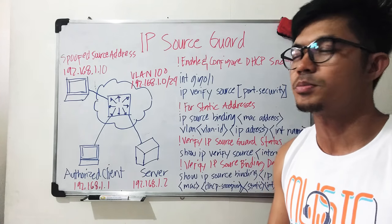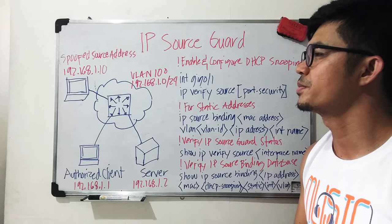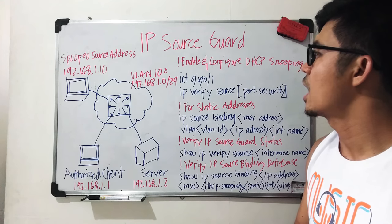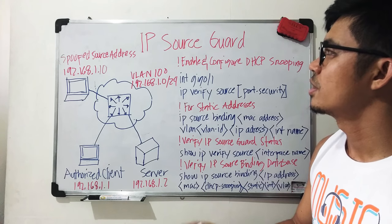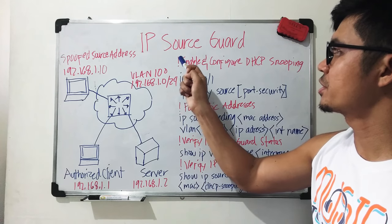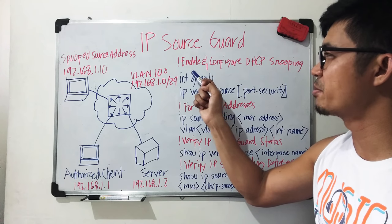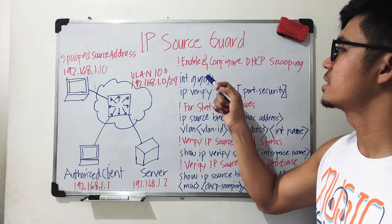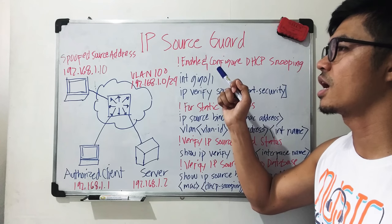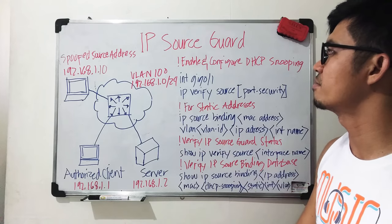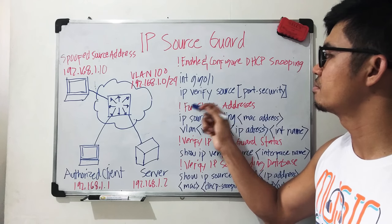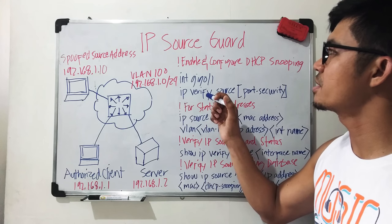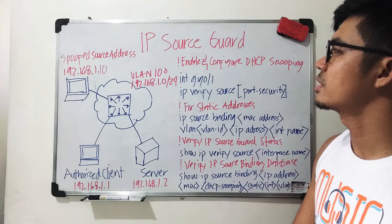It's important to emphasize that before you configure IP Source Guard, you need to enable and configure DHCP snooping first, because the switch is going to refer to that database before it can do any checking on the source IP or source MAC address.